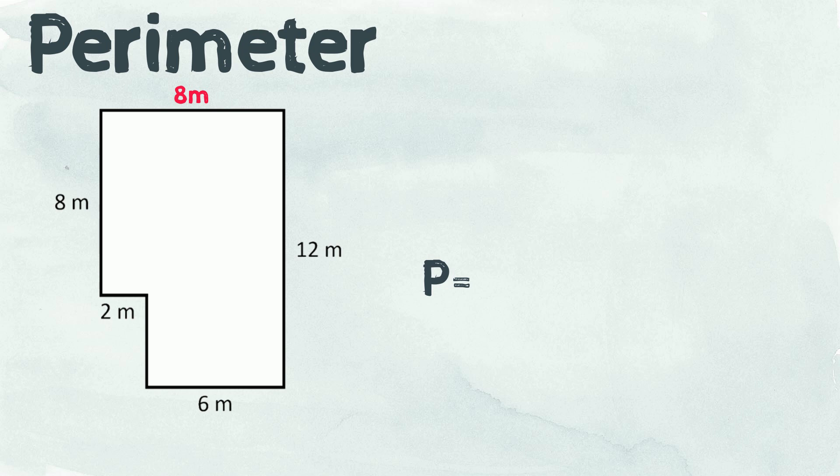The other measurement we're missing is this one. Can you see a way to work it out? The total width of the shape is 12 meters. This portion of the width is 8 meters. How many more meters must be here for the total height to add up to 12 meters? 4 meters.